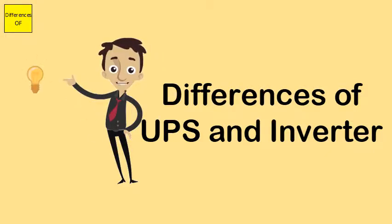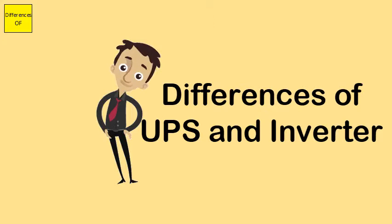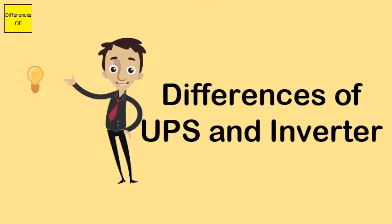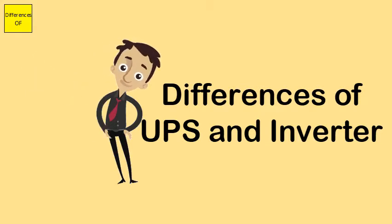UPS is costly, while an inverter is comparatively cheaper. Similarities: both are devices useful when outages in power supply occur.